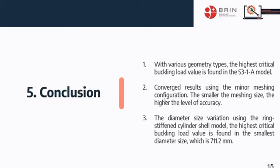Number three: the diameter size variation using the ring-stiffened cylinder shell model, the highest critical buckling load value is found in the smallest diameter size which is 711.2 mm.